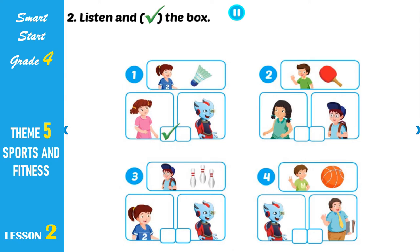Look at the pictures. Listen. There is one example. One: Hey! It's Jane, Mai, and Charlie. Okay, kids, find something to play. What are you going to do, Lucy? I'm going to play badminton with Jane. Can you see the tick? This is an example. Now listen and tick the box. Two: Ben, what are you going to do? I'm going to play table tennis with Mai. Three: What are you going to do, Charlie? I'm going to go bowling with Alfie. Four: What about you, Tom? What are you going to do? I'm going to play basketball with you, Daddy. Great!